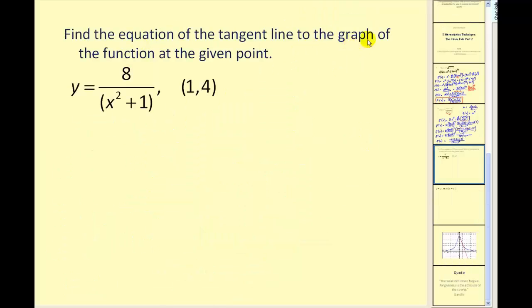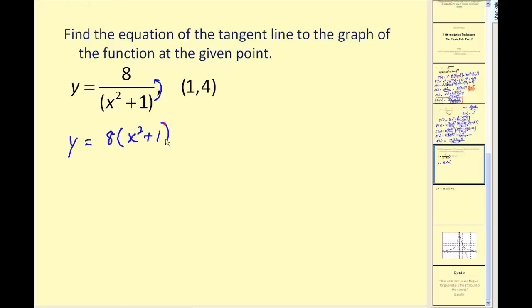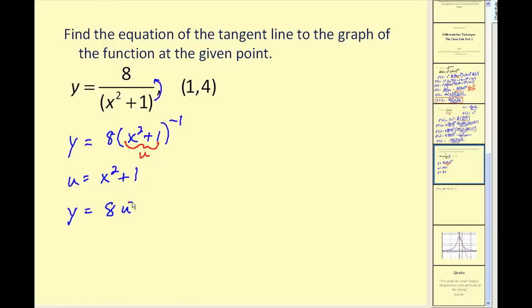Let's find the equation of a tangent line to the graph of the given function. Here's our function and here's our point. To find the equation of a tangent line we have to find the slope by first finding the derivative and then evaluating it at x equals 1. We may think we have to use the quotient rule, but we don't — we can move this up to the numerator so this function would be 8 times x squared plus 1 to the power of negative 1. Our inner function u is x squared plus 1, which makes our y equal to 8u to the power of negative 1.